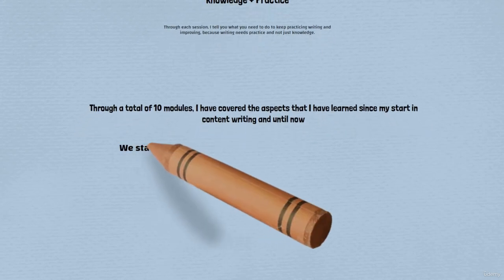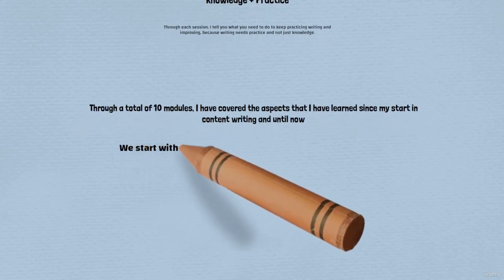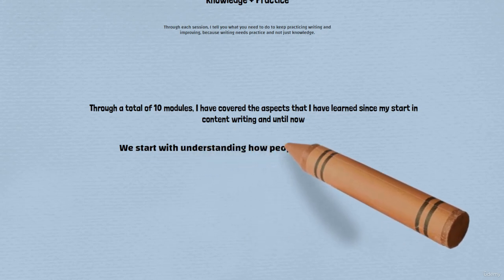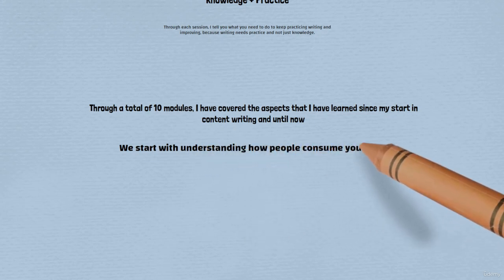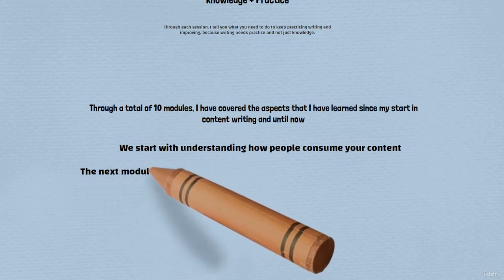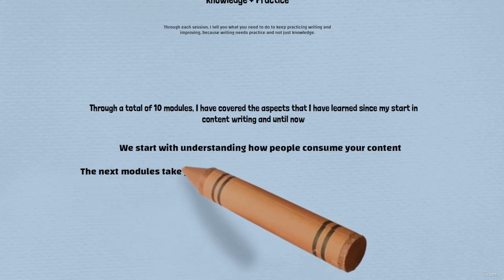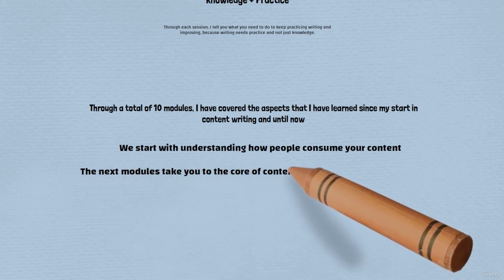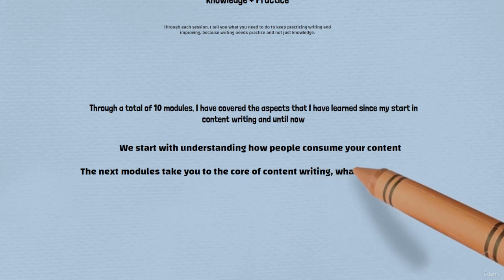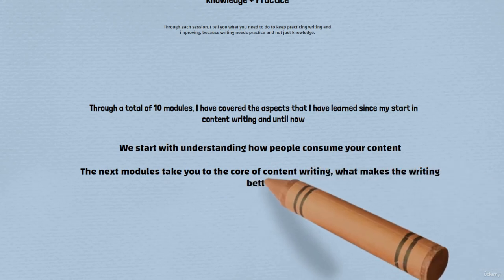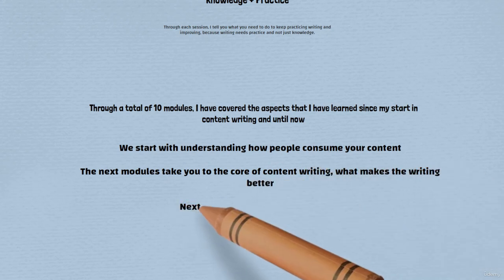We start with understanding how people consume your content, to know how you can offer better content for them and understand the bigger picture of writing content on the web. The next modules take you to the core of content writing — what makes the writing better: its types, writing, tone, voice, flow, and much more technical aspects which you can use to improve your writing.